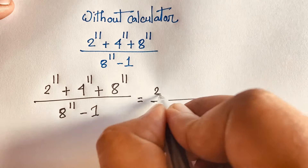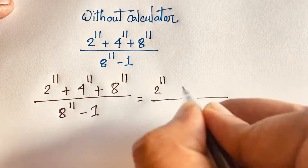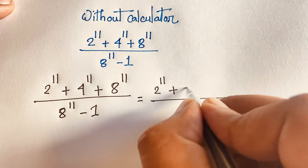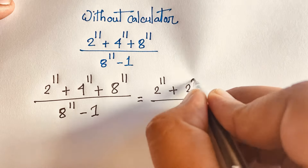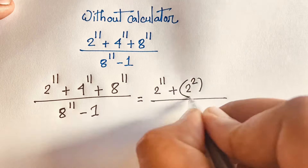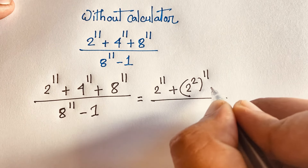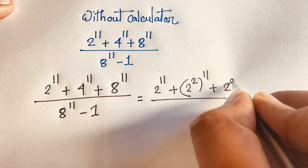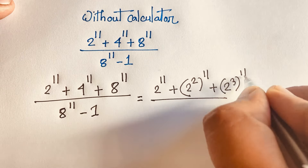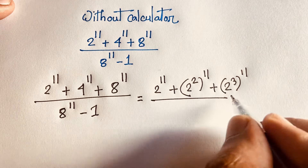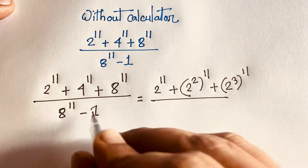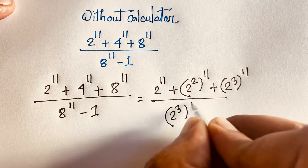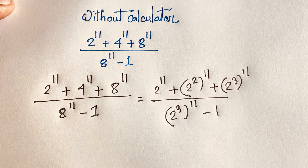Now I can see here is 2 to the power 11 plus 4, and we know that 4 is 2 to the power 2, whole to the power 11. Then here is plus 8, which is 2 to the power 3, whole to the power 11. The denominator is also 2 to the power 3, whole to the power 11, minus 1.